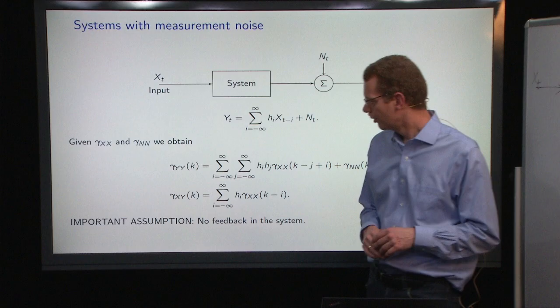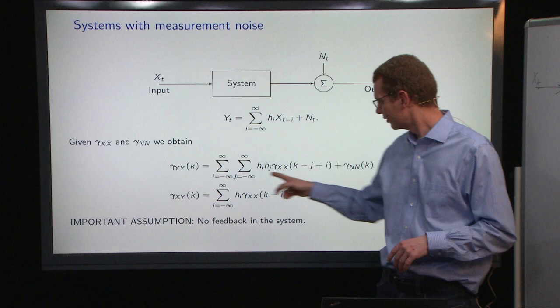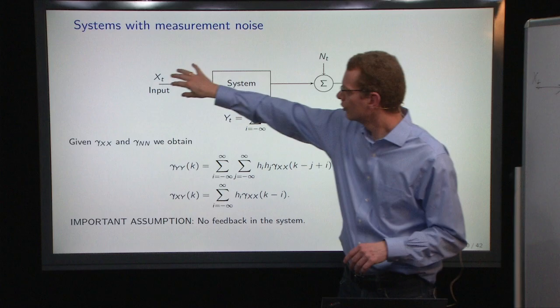Now, if you know the autocovariance of x and the noise, then we can do the math, and we can see that besides what we got before, for the autocovariance here when we look at the output, we get some part that comes from x and from the system, but we also get some structure from the output, in the sum here.